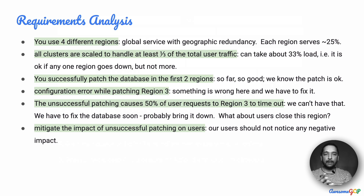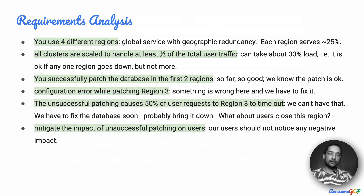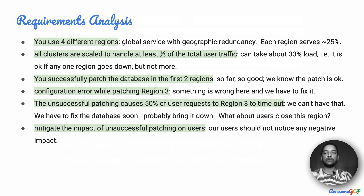You successfully patch the database in the first two regions, so we know that the patch is okay and we know the process. But there's been a configuration error, which is known, while patching region 3. And now we need to rectify that. The unsuccessful patching causes 50% of user requests to region 3 to timeout. We obviously can't have that. We have to fix the database soon, probably bring it down in the process.